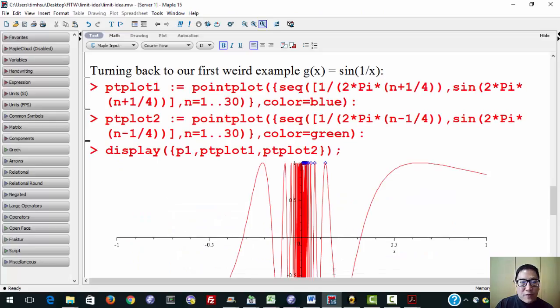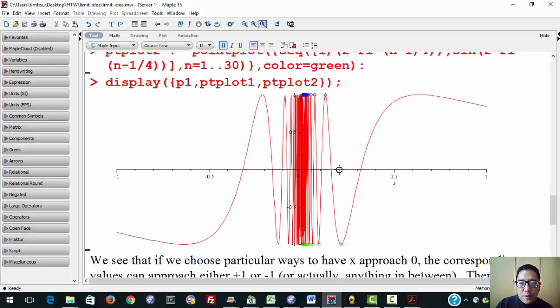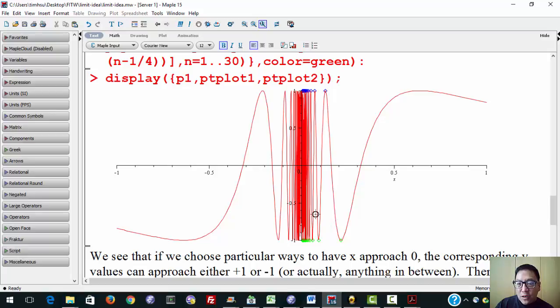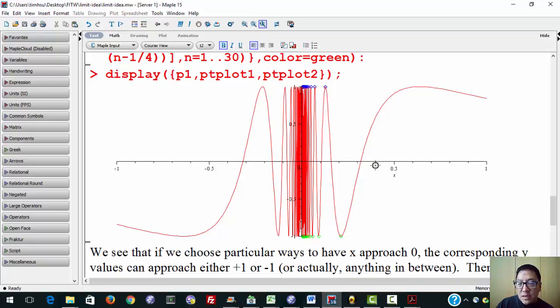Alright, now going back to the graphing program here, so turning back to our first weird example, g(x) equals sine of 1 over x, if you look at what we've drawn here, here in red is the graph of sine of 1 over x, but here in blue is a sequence of points on the curve with x values approaching 0, and here in green is a second sequence of points on the curve with x values approaching 0, and we see that over here, as x approaches 0, y approaches 1, and over here, as x approaches 0, y approaches negative 1.